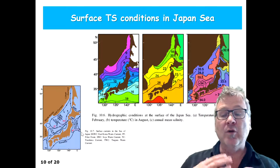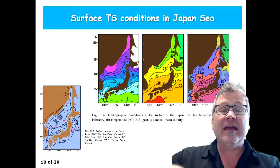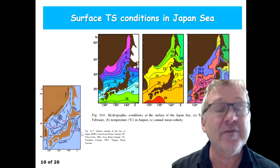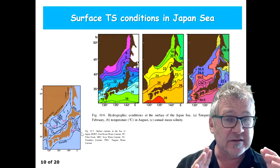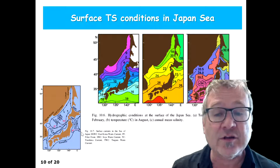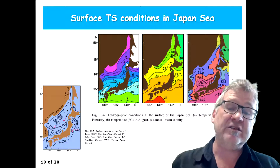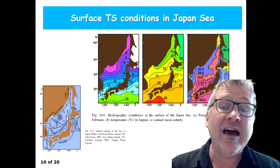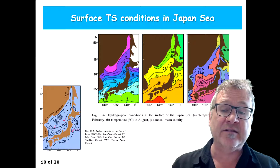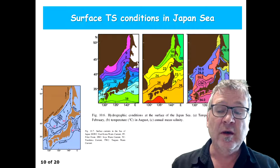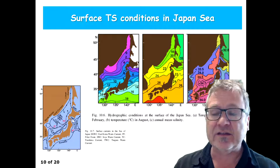However, the polar front also exists in the Japan Sea. The Japan Sea is an adjacent sea that has a limited connection to the ambient ocean, essentially because of the islands. You have some straits that have connections, but the islands limit this connectivity.